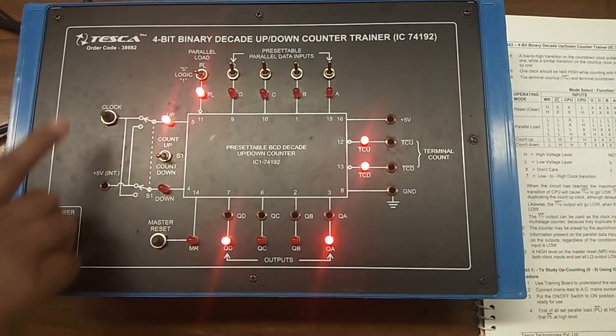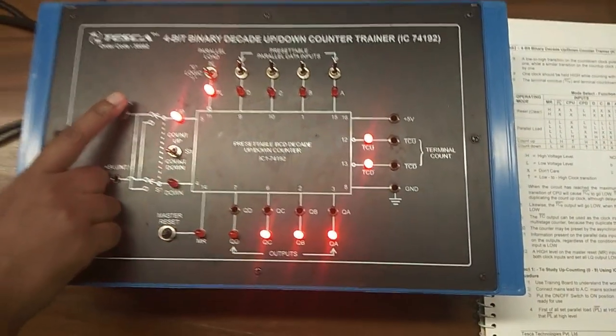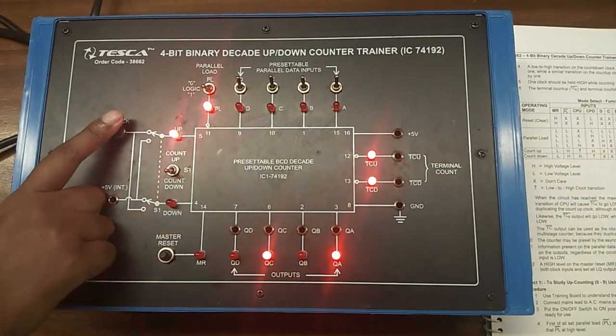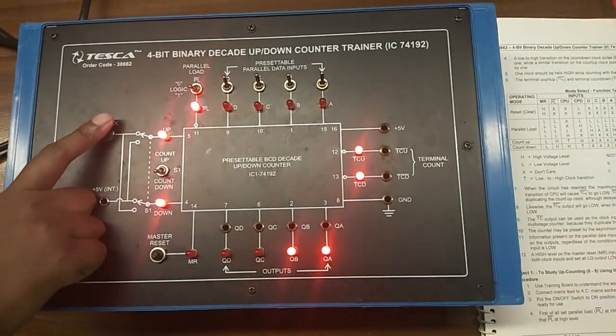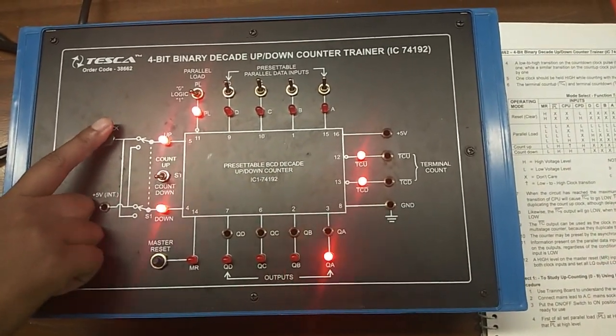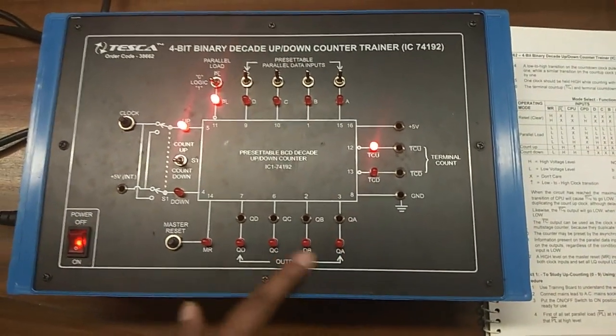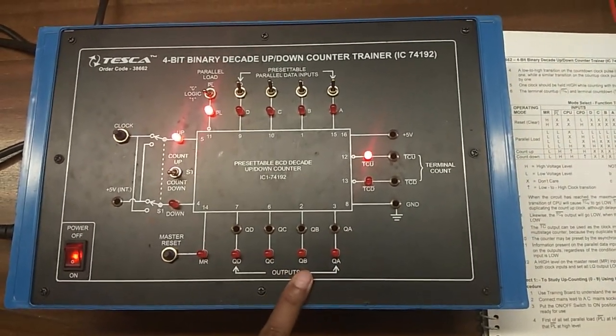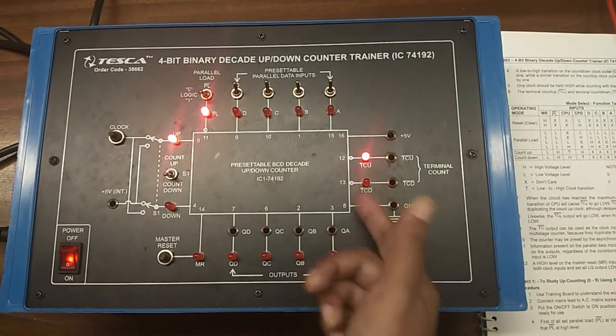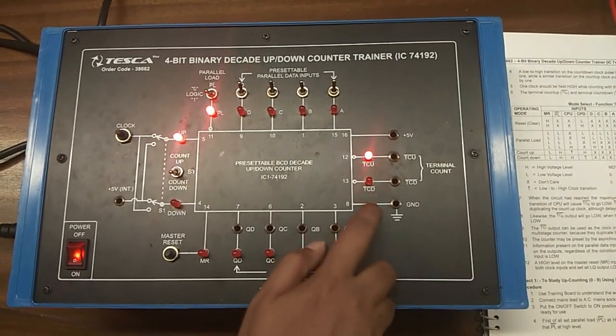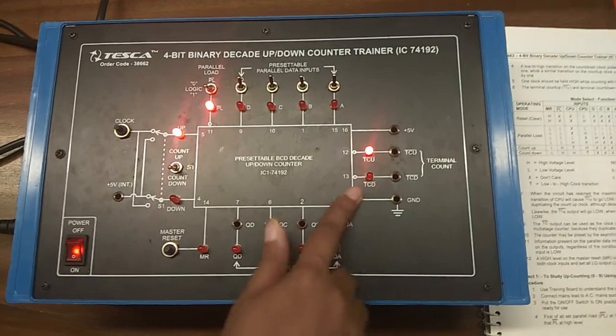I can see it starts from 9, 8, 7, 6, 5, 4, 3, 2, 1. And you can see this LED, as the counter has reached its minimum state, this TCD terminal has gone low.